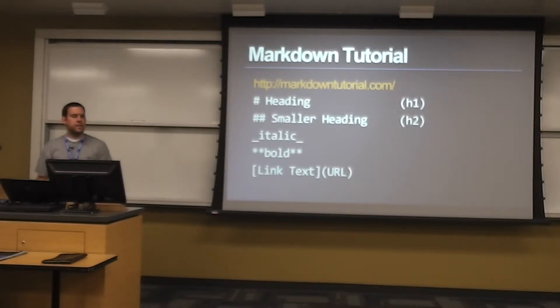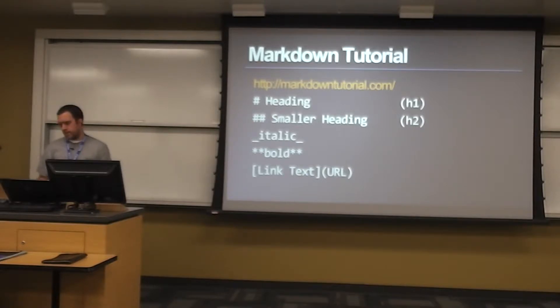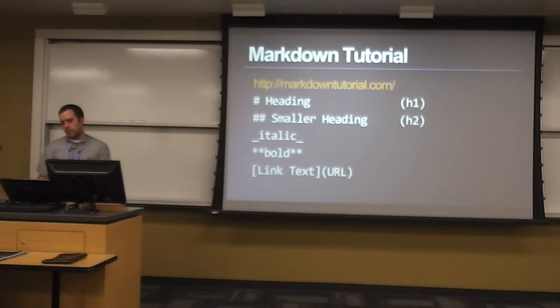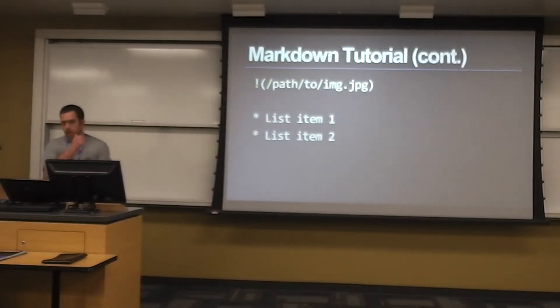To make text italic, you just put underscores around it. To make it bold, you put two asterisks. To create a link, you put the link text in square brackets and the URL right next to it in parentheses.